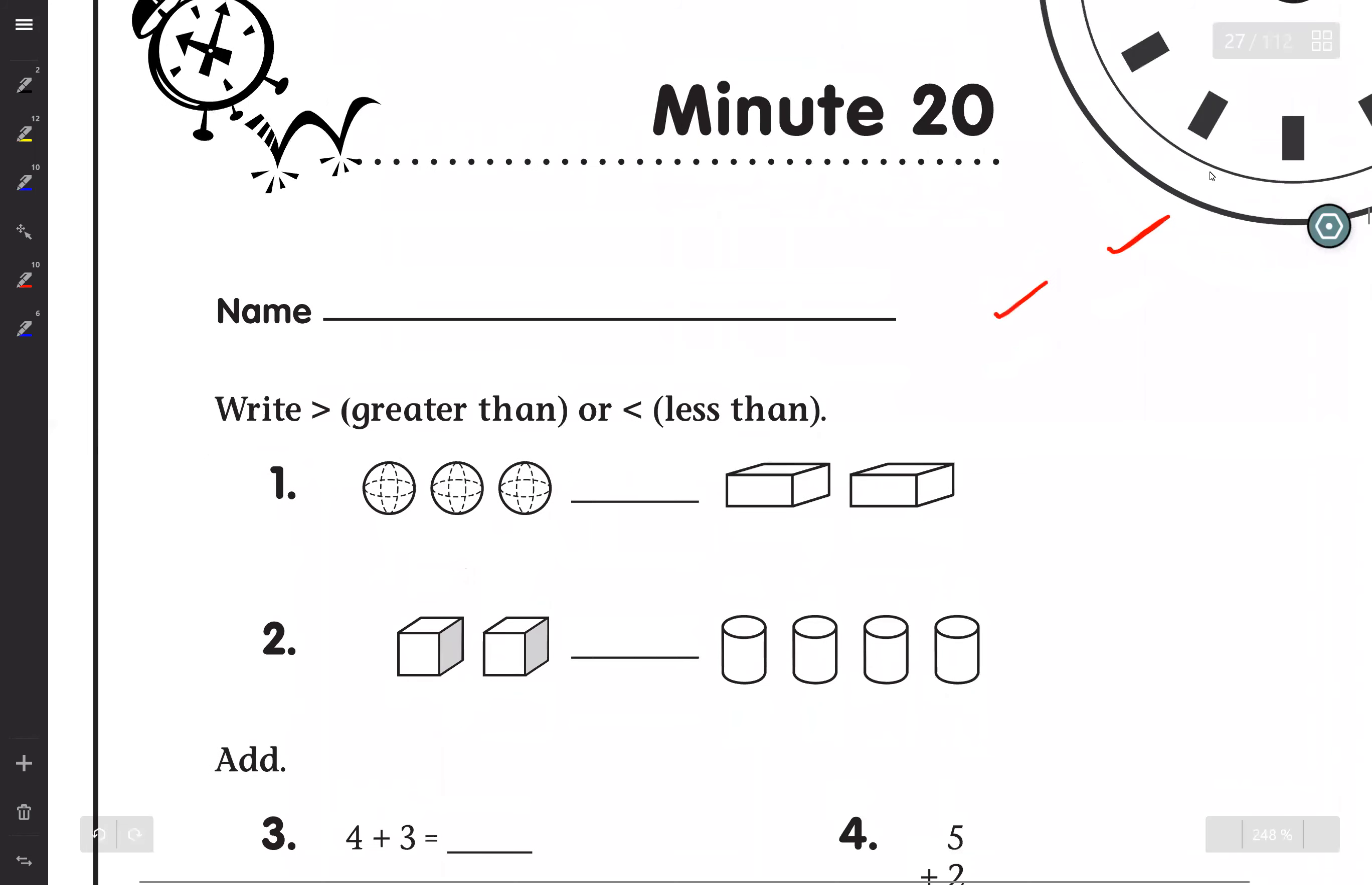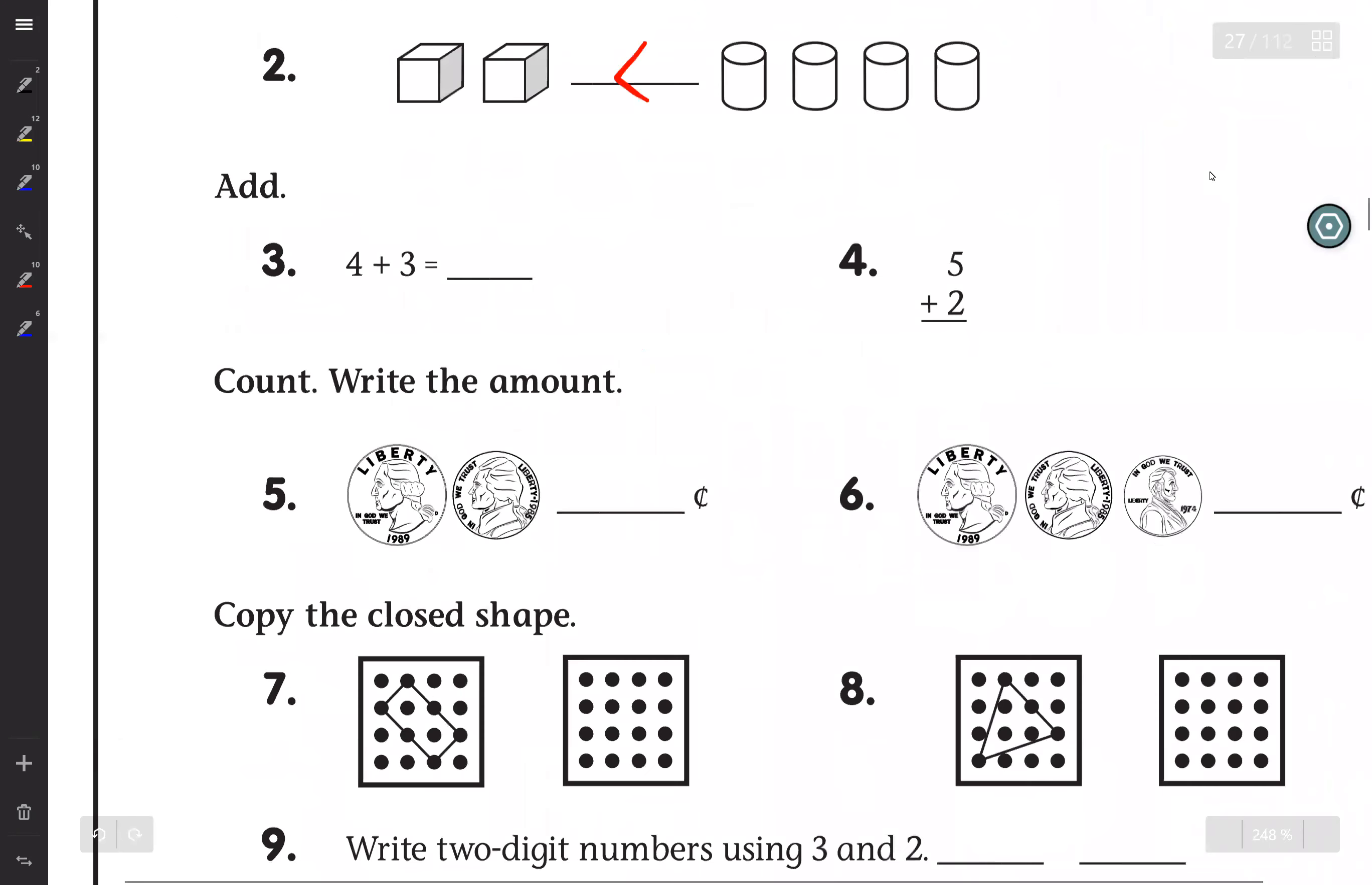Minute 1, we have 3 squares and 2 cubes, so 3 you write here. Number 2 is 2 cubes and 4 cylinders, so 4 cylinders. You know, 2 is less than 4 cylinders.